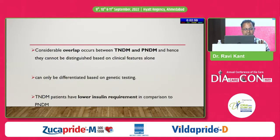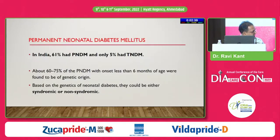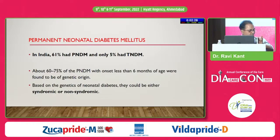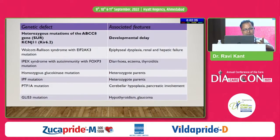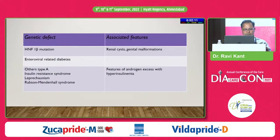There is considerable overlap between transient and permanent neonatal diabetes, but transient diabetics require less insulin compared to permanent. Features of transient neonatal diabetes include severe growth retardation, low C-peptide levels, and absent auto-insulin antibodies. There may also be fatal malformations in some patients. Coming to permanent neonatal diabetes — most Indian neonates have permanent diabetes mellitus. Based on the genetics, neonatal diabetes could be either syndromic or non-syndromic. If ABCC8 or sulfonylurea receptor or inwardly rectifying potassium channel abnormality is found, there could be associated developmental delay and other malformations.